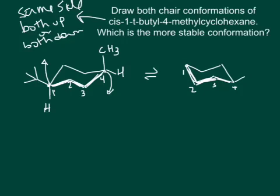Our two groups now are going to be still on carbon one and carbon four. And they started out both up. We decided to make them both up, so they're still going to be both up. That puts the tert-butyl here and the hydrogen. And in carbon four, we have the methyl here and the hydrogen. So those are our two chair conformations.